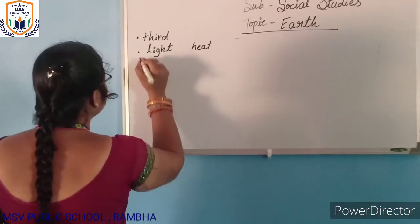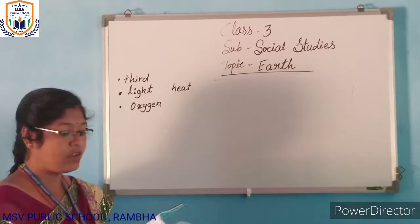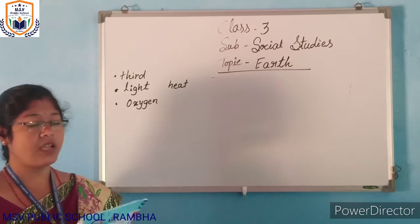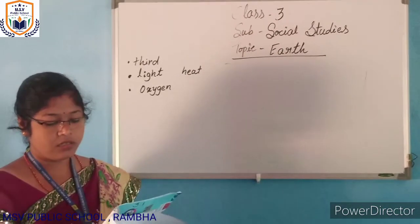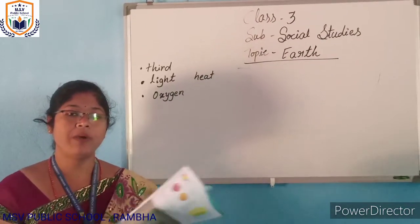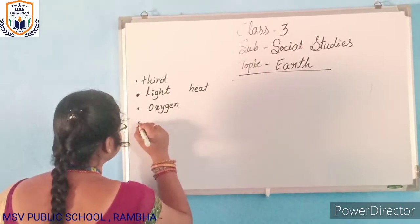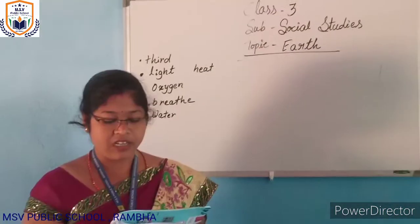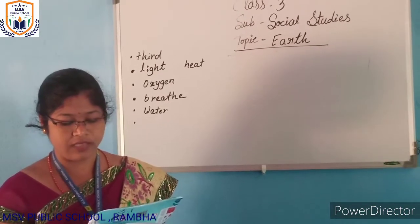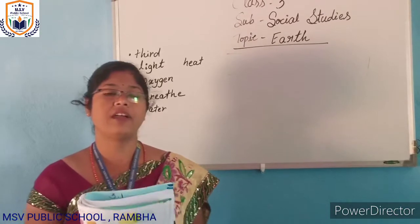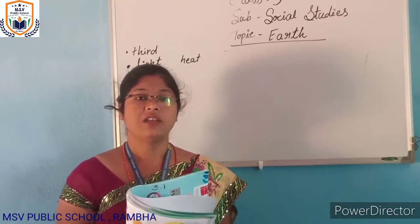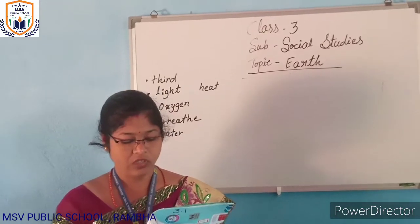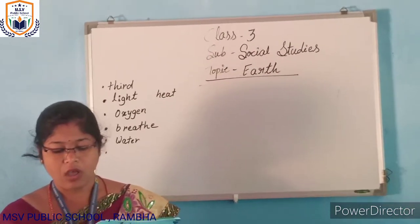The air on Earth is rich in oxygen, which we need. Oxygen is more than enough, that is why we can breathe well. Only 71% of Earth's surface is covered by oceans. The rest of it is land, which is enough to support all of us.